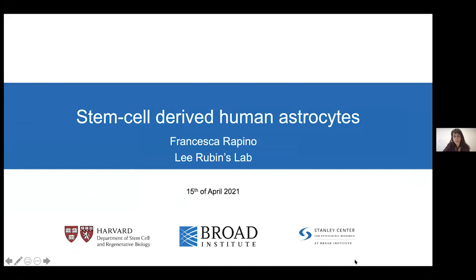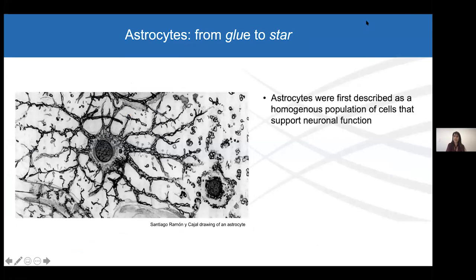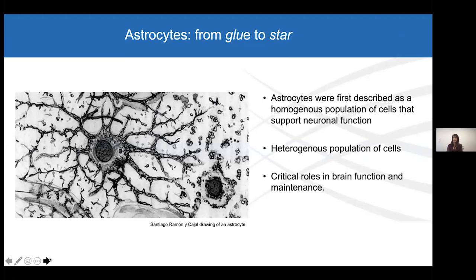My name is Francesca Rapinoe and I'm a postdoc in the Rubin lab. We've heard about excitatory neurons and motor neurons, but I would like to focus on another cell type that populates the brain: astrocytes. Astrocyte from ancient Greek means star-shaped cells, as seen in beautiful immunofluorescence. When cells were first discovered, they were thought to be just glue—also called glia, a general term covering astrocytes, microglia, and oligodendrocytes—with only the function of supporting neural growth, and considered a homogeneous population. Thanks to many groups, we now know astrocytes are a very heterogeneous population that play a critical role in brain function and maintenance.